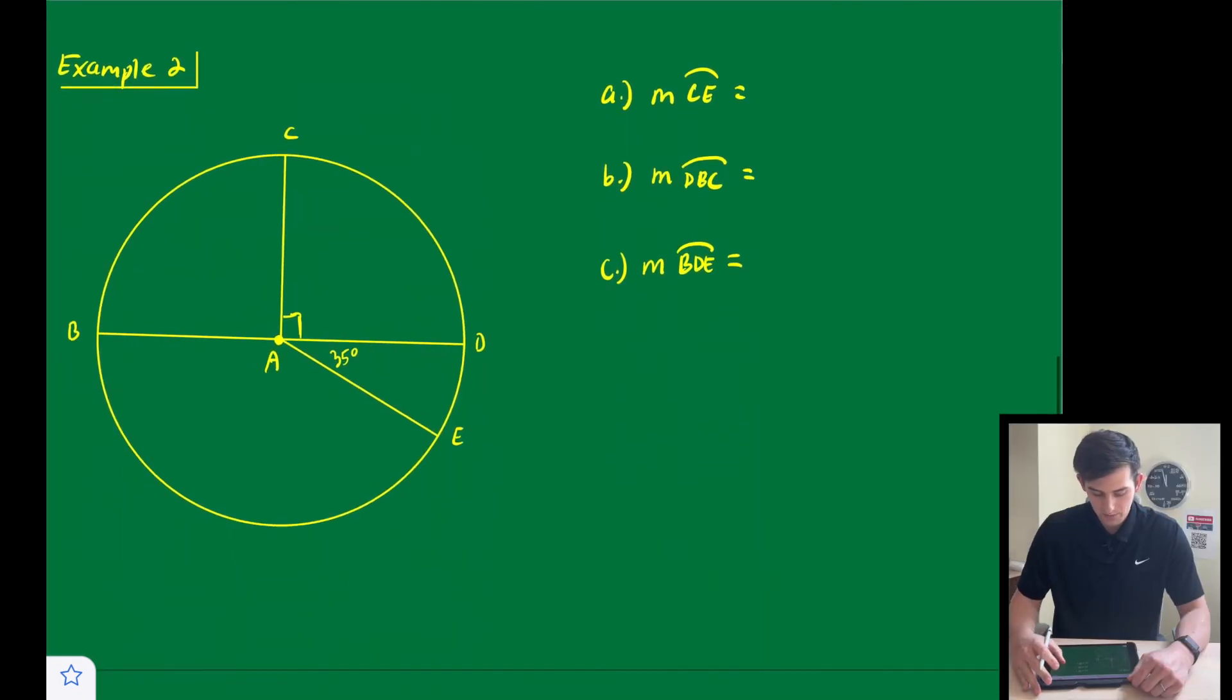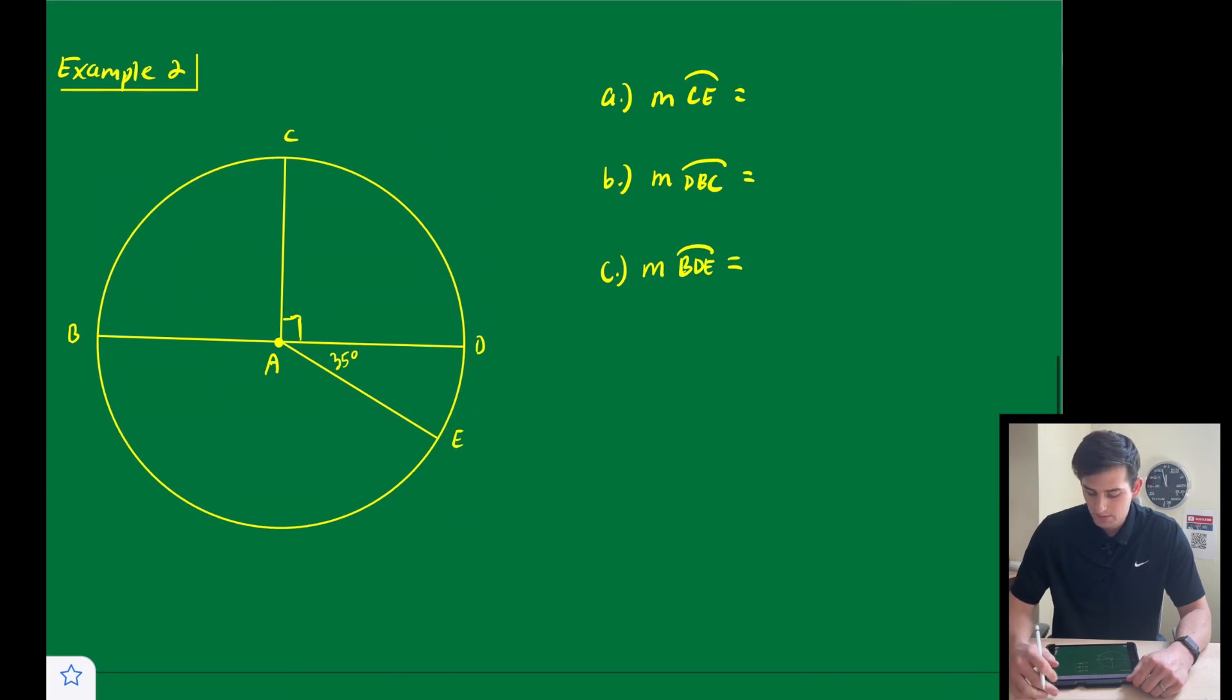In our last example, we're going to find the measure of minor arc CE, so that would be right here. Well, notice we have this right angle box, so that means this is 90 degrees. So we can just add these two together, 90 plus 35, and we get 125 degrees for our entire minor arc there.